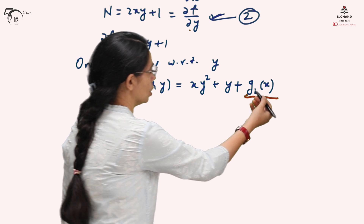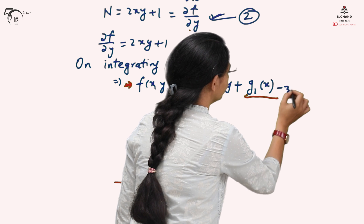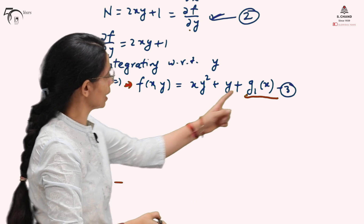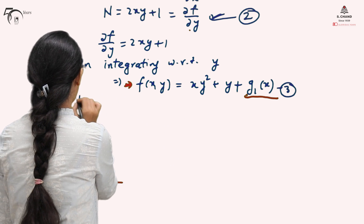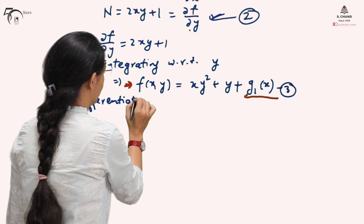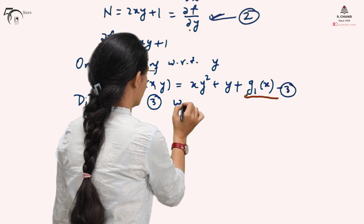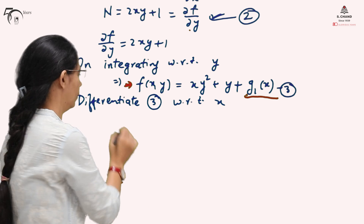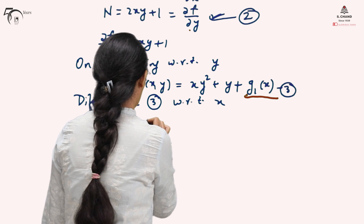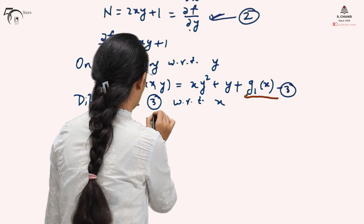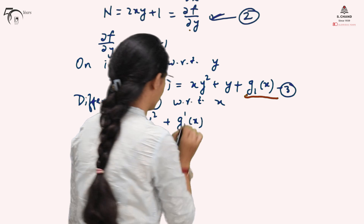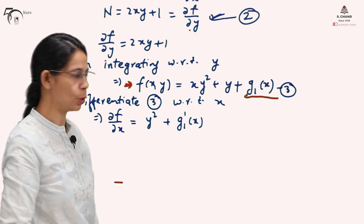So we write f(x,y) = xy² + y + g₁(x) — call this equation (3). We will use equation (1) to find the expression for g₁(x). Differentiating equation (3) with respect to x, we get: ∂f/∂x = y² + g₁'(x) — call this equation (4).